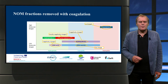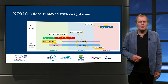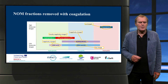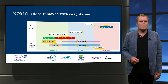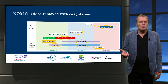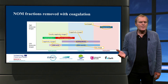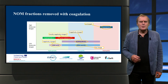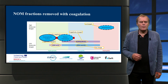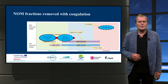In this graph, the different NOM fractions are characterized based on molecular weight and hydrophobicity or hydrophilicity. Molecular weight is on the y-axis and hydrophilicity is on the x-axis. We distinguish hydrophobic molecules, humic acids, biopolymers, building blocks, low molecular weight acids, and low molecular weight neutrals. With coagulation, we can remove all the hydrophobic organics and part of the humic acids and biopolymers.